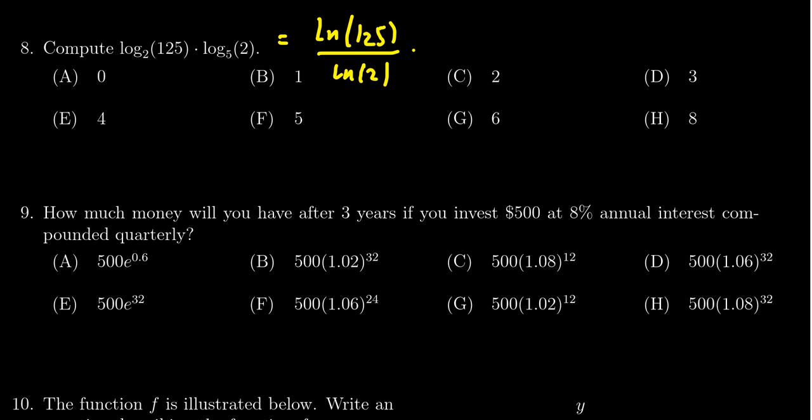Log base 5 of 2 becomes the natural log of 2 over the natural log of 5. I'm going to swap the denominators, because it's just multiplication and it commutes.